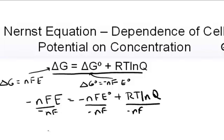And we end up with the potential at any point in time along the reaction path, that is under non-standard conditions, is equal to the standard potential minus RT over NF times the natural log of Q.